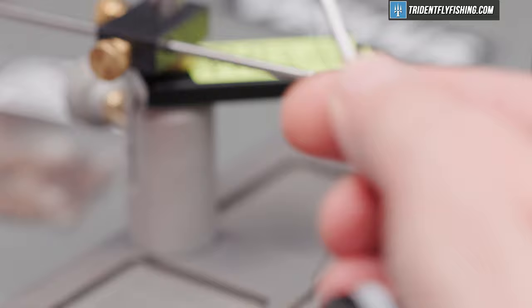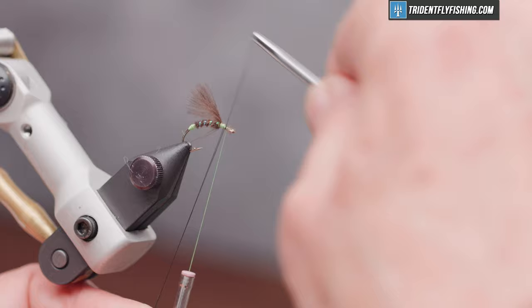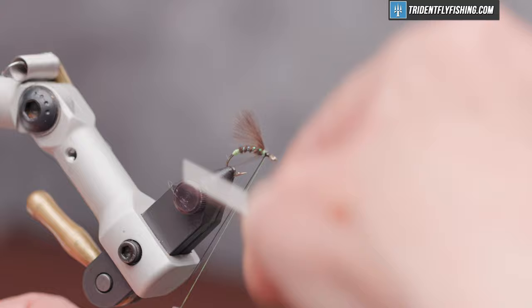Next, we're going to change thread. I'm going to go with some 50D GSP Veevus in black. The wing is going to be deer hair, and I prefer to use GSP to tie that in.